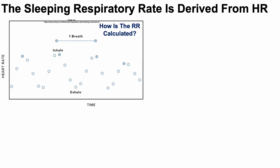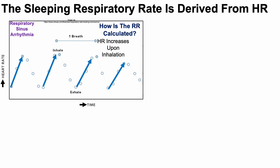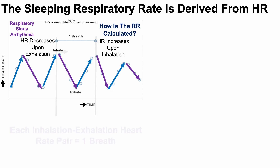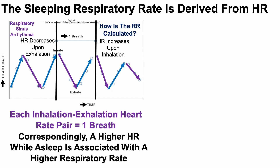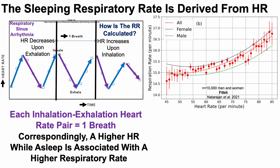How is the respiratory rate calculated? The sleeping respiratory rate is derived from heart rate. On the y-axis of this plot, heart rate is plotted against time, and the respiratory rate is calculated using a phenomenon known as respiratory sinus arrhythmia — heart rate increases upon inhalation and correspondingly decreases upon exhalation. Each inhalation-exhalation heart rate pair equals one breath. A higher heart rate while asleep is therefore associated with a higher nighttime sleeping respiratory rate.